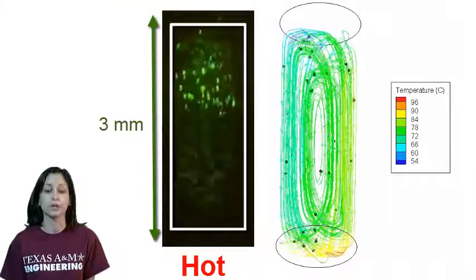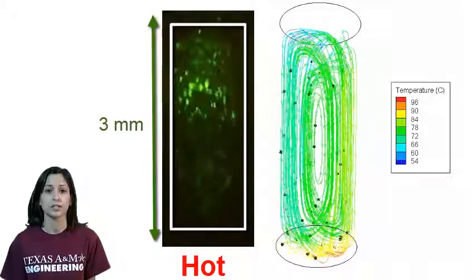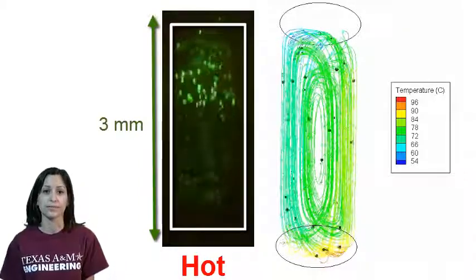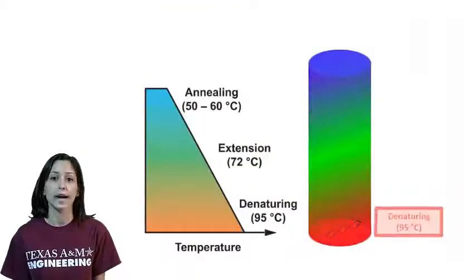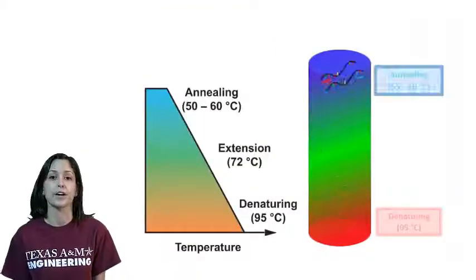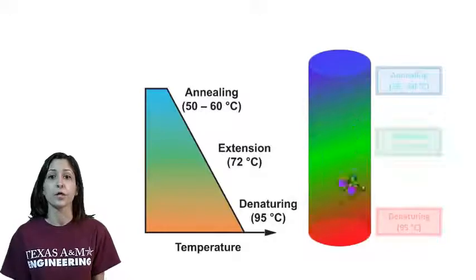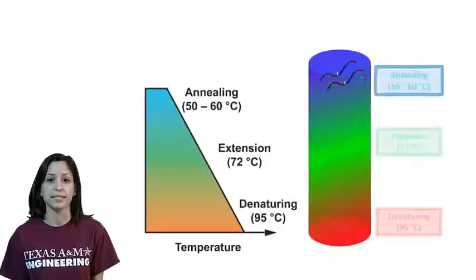Small cylindrical reactors containing PCR mixture are heated from below, causing the fluid to circulate due to thermal instability. The convective flow automatically shuffles the PCR mixture from the hot bottom region to the cold top region repeatedly, enabling rapid PCR.